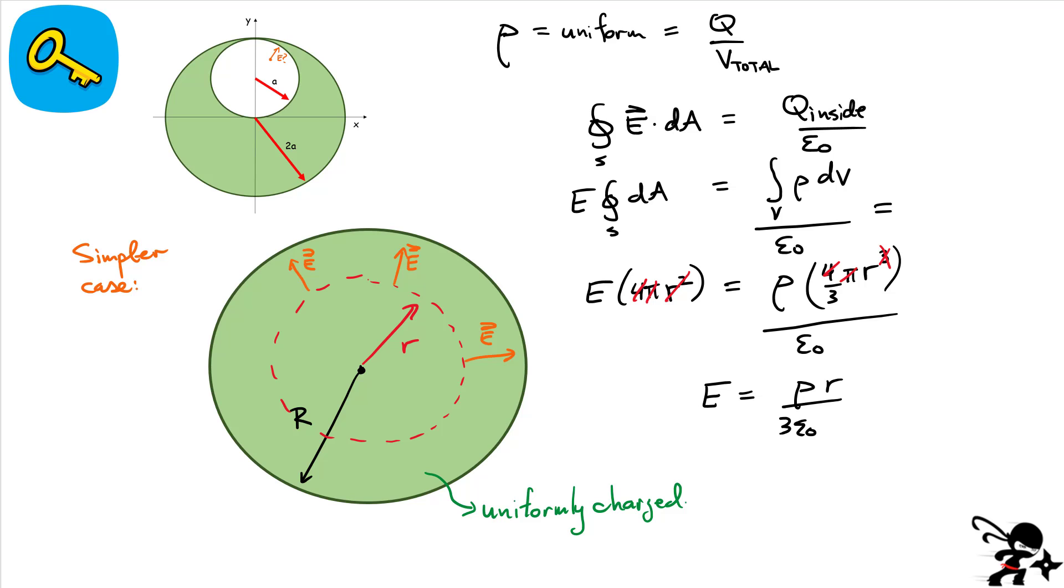If I wanted to write it as a vector, I can just write E and add a vector r like this. So that tells me that the field is radially pointing away from the center of the sphere. We're going to use this result now in order to find the field of a much more complicated object, the object I have here above, the object with the cavity inside. Let me show you the trick on how to do that.